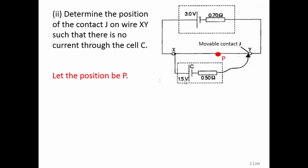Let the position be P. The potential difference across X to Y is given by the length between X and P multiplied by the resistance per unit length, so that gives us the length of 0.9 meters.